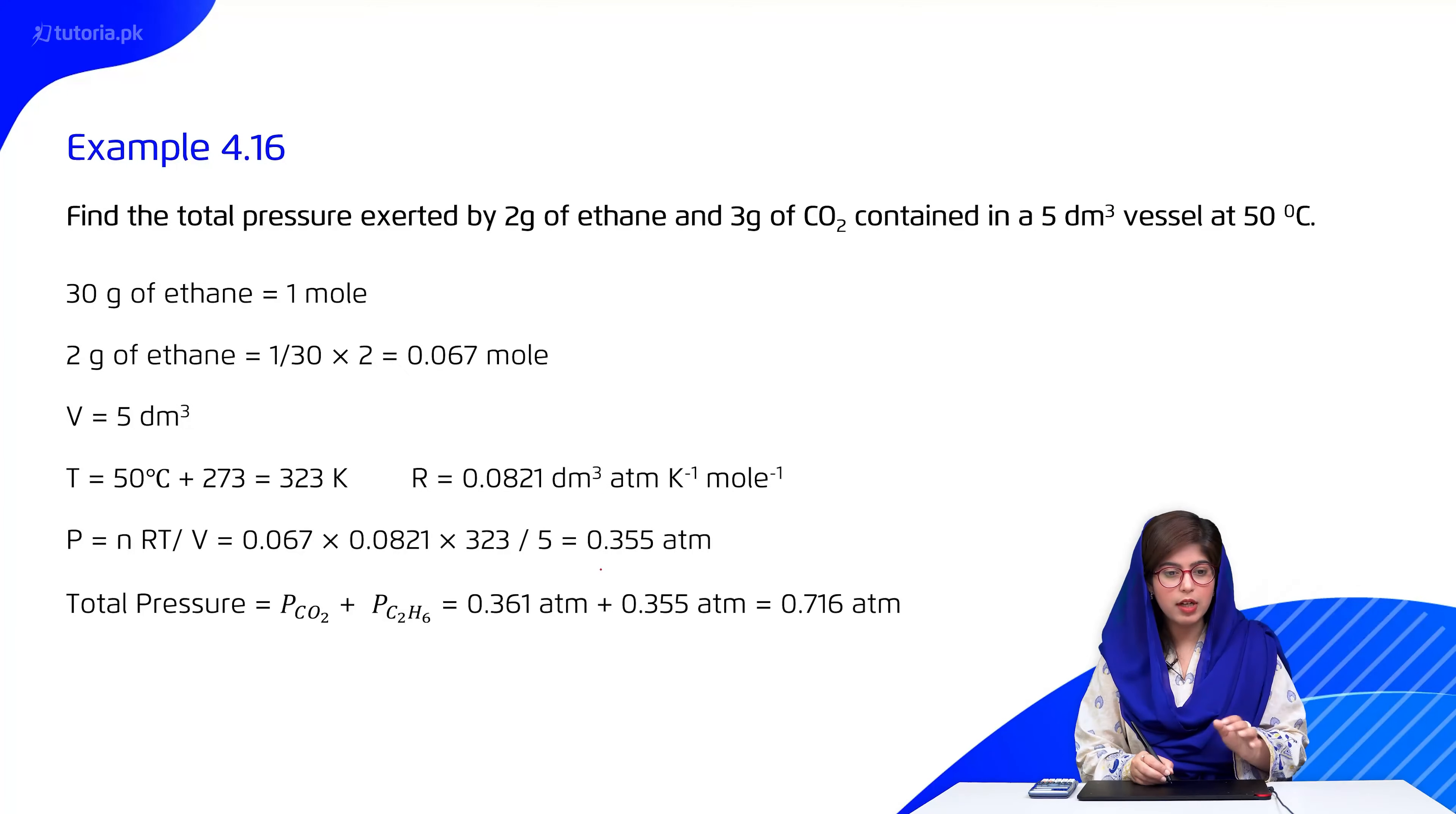students, we repeat the same procedure for ethane. For ethane, we calculate the number of moles. The volume is 5 decimeter cube. The conditions are the same for both, temperature is also 50 degrees. We calculate each component's pressure, that is the partial pressure, and we add them. The total pressure comes to 0.716 atmosphere.